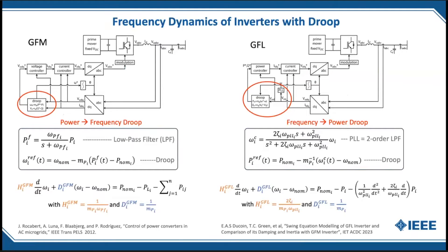Let me look at some forms of stability, starting with frequency and the grid-forming inverter. This is an inverter that presents as a voltage source where the frequency and amplitude depend on the real and reactive power flows. The measured power influences the frequency through a low-pass filter, introducing dynamics. The difference between the power and its reference value is used to droop the frequency. This gives a coupling that looks just like a swing equation for a synchronous machine, with terms that look like inertia and damping depending on the droop characteristics.